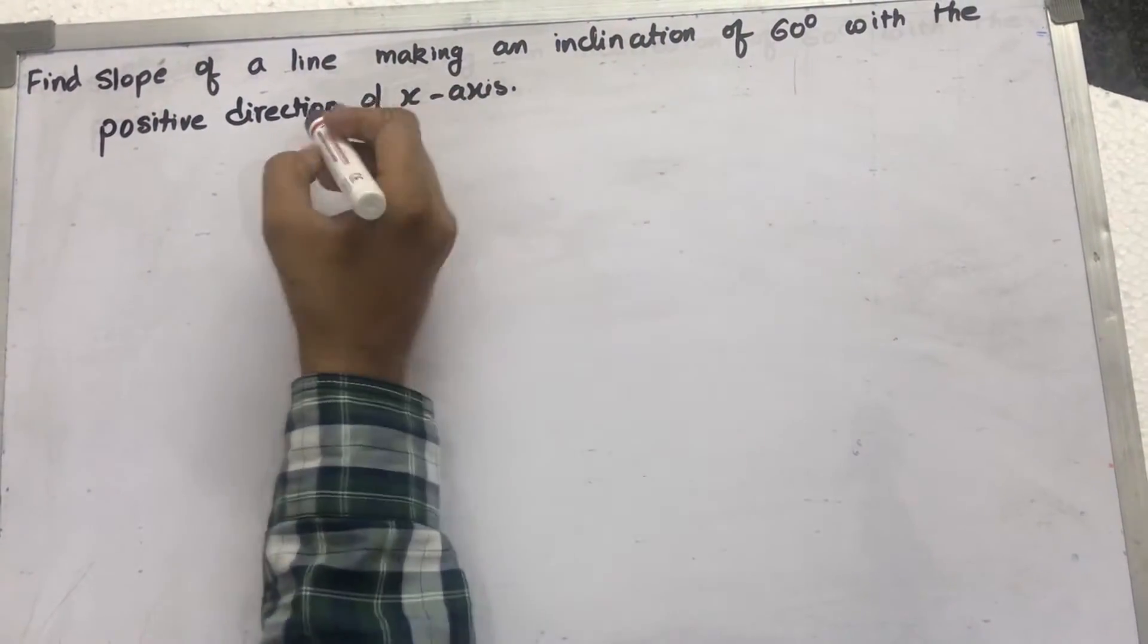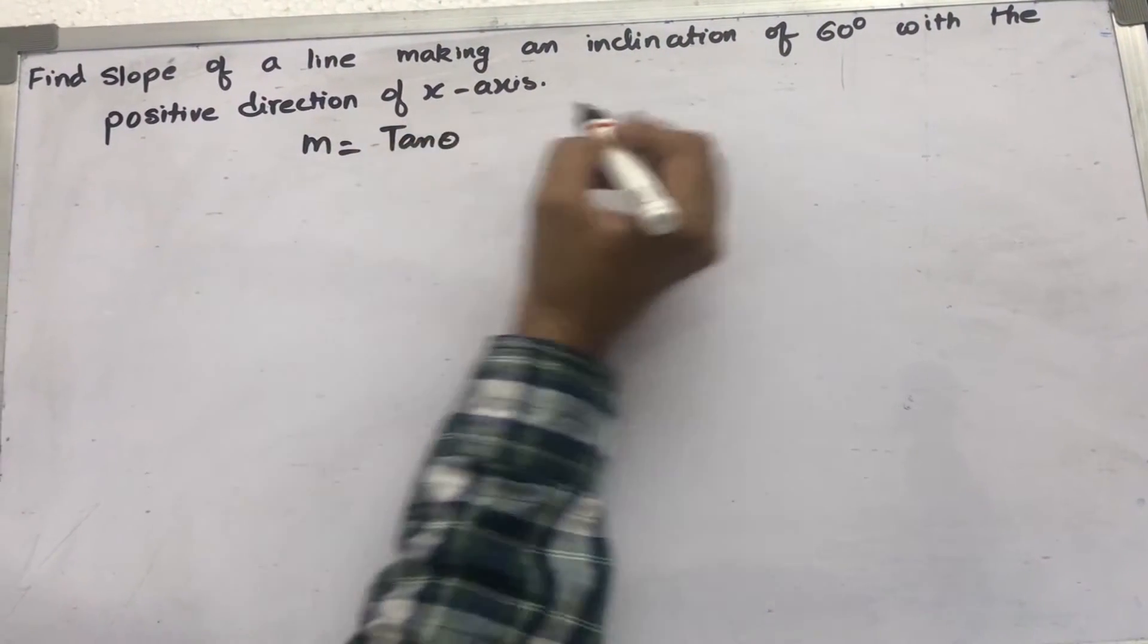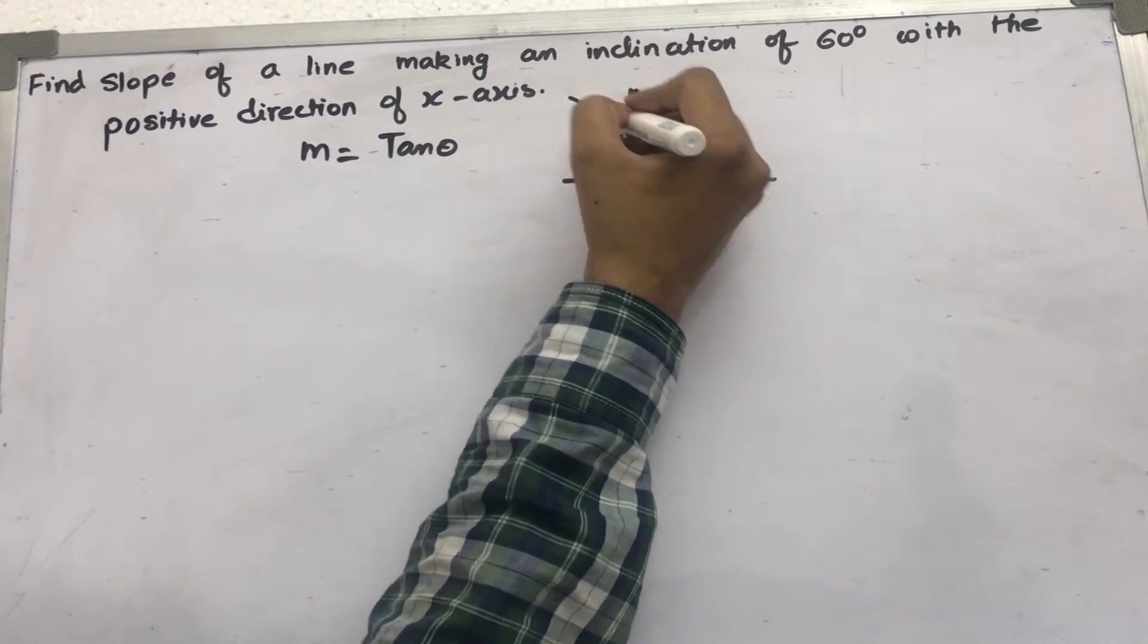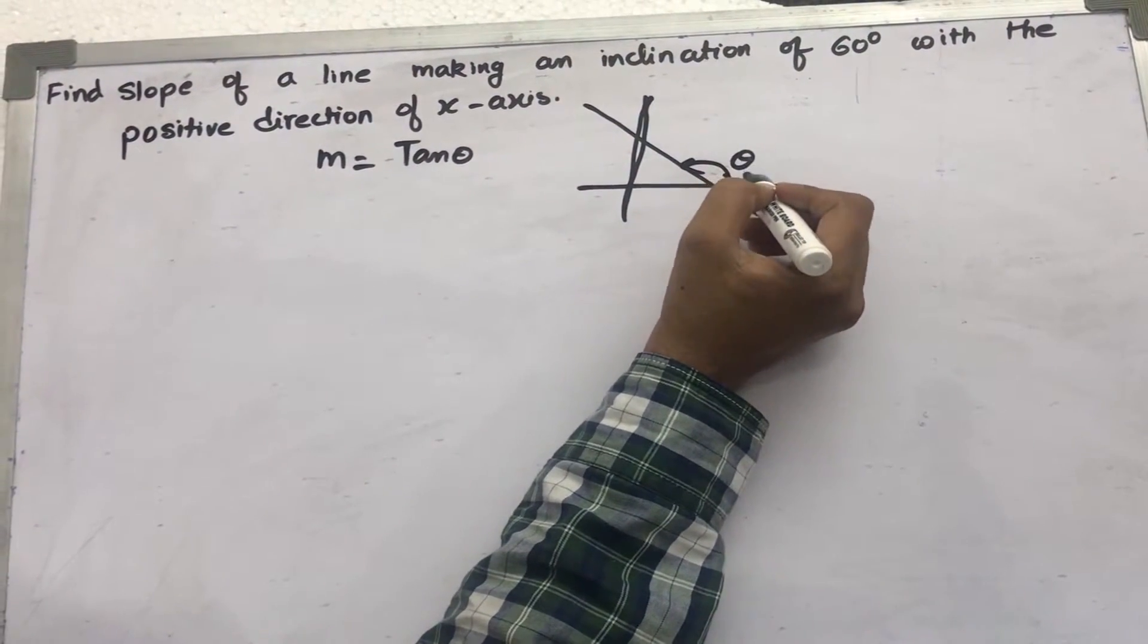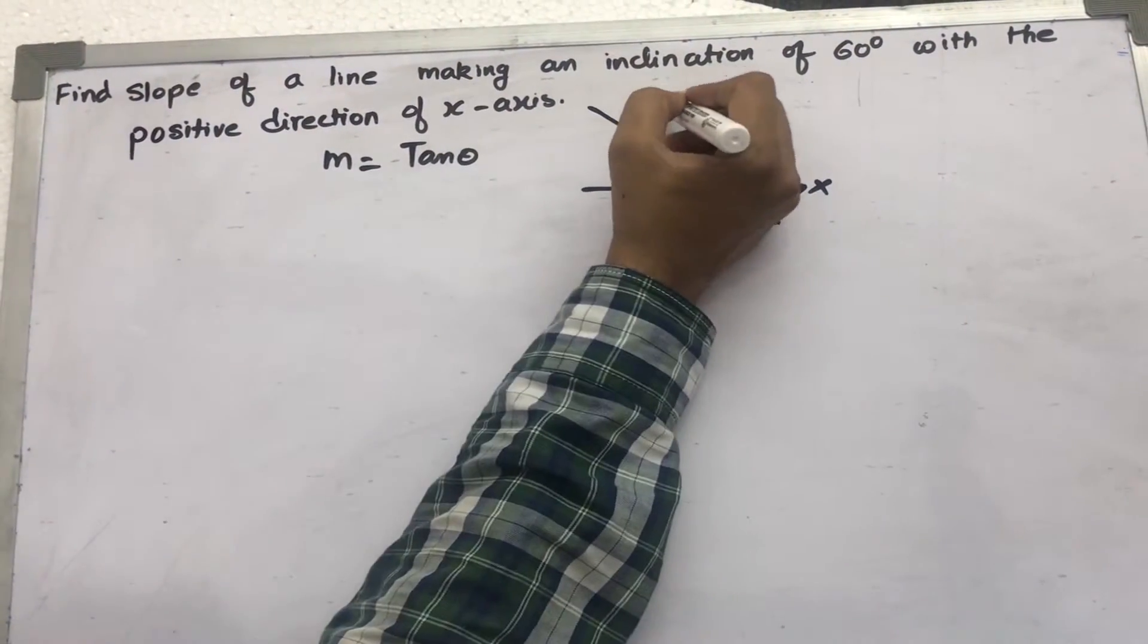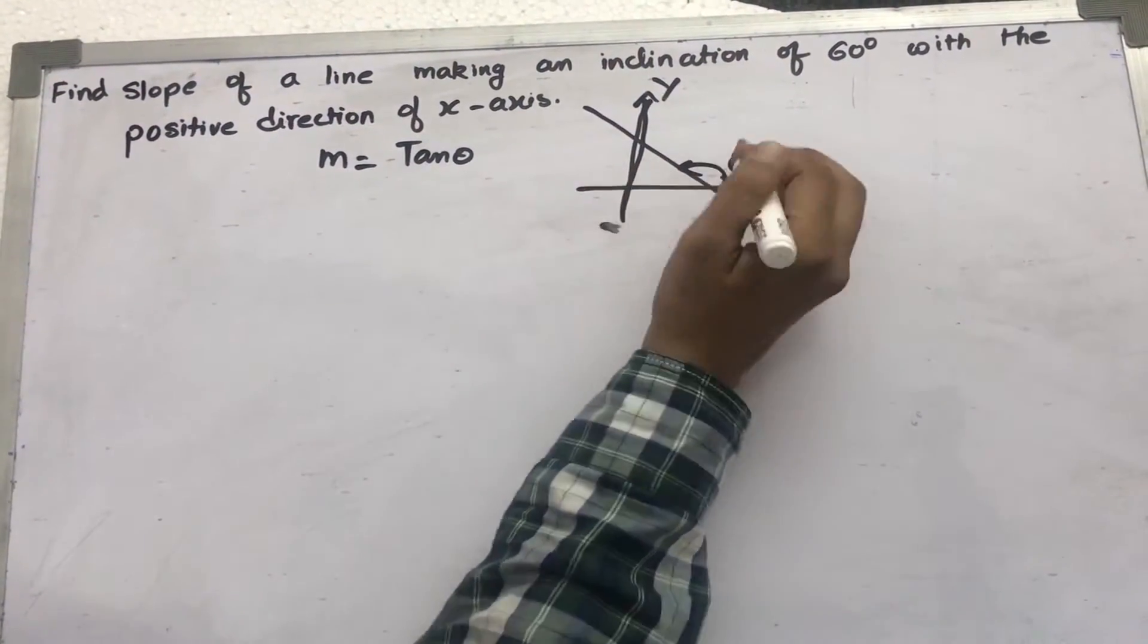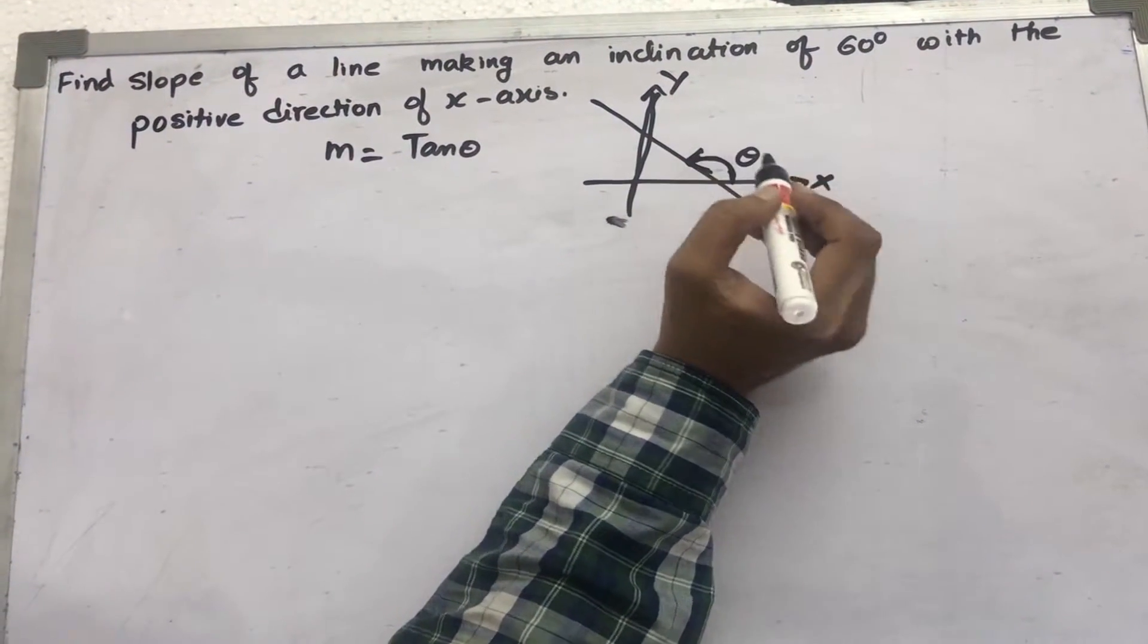Now we know that the slope of a line is equal to tan theta, where theta is the inclination with respect to the positive direction of the x-axis and the angle is measured in the anti-clockwise direction.